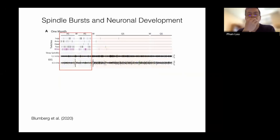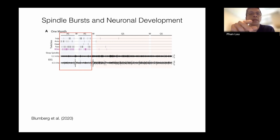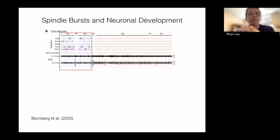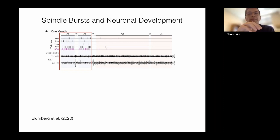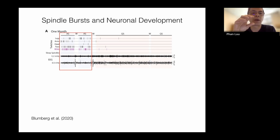It's been proposed that a way to understand REM sleep dominance in the first month of human postnatal development is that REM sleep is a stage in which the wiring of sensory cortices — like the visual cortex, auditory cortex, and so on — occurs prior to the infant being alert and able to regulate its wake cycle. Deprivation of REM sleep during these critical periods of neuronal maturation impairs the function of the primary sensory cortices.